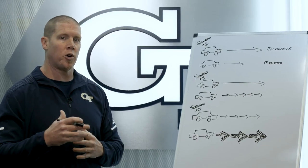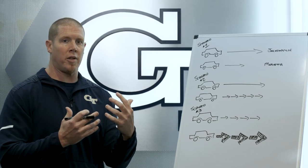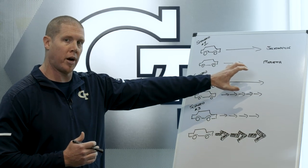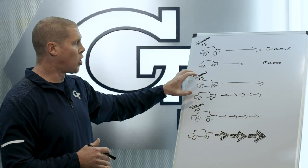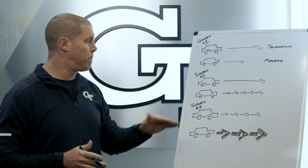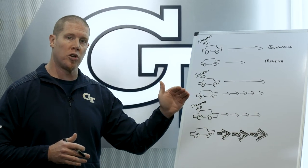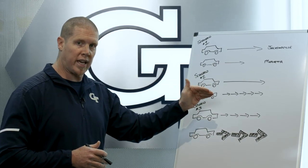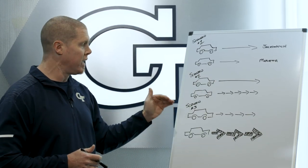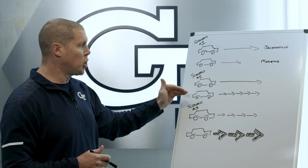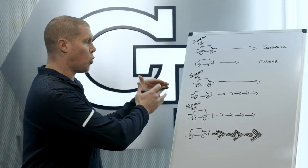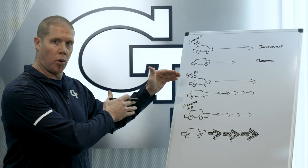Catapult's algorithm focuses more on acceleration rather than just distance. In scenario number two, both cars are going to Marietta. Car number one is hopping on the highway — no traffic, boom, right to where they want to be. Car number two is going city driving: on the gas, on the brakes, on the gas, on the brakes — accelerate, decelerate. Car number two in this scenario is going to have a higher player load; it's working more than car number one.